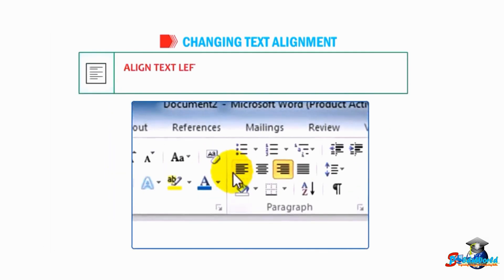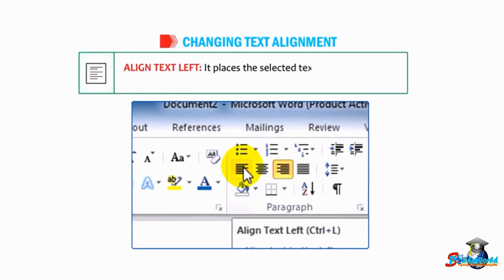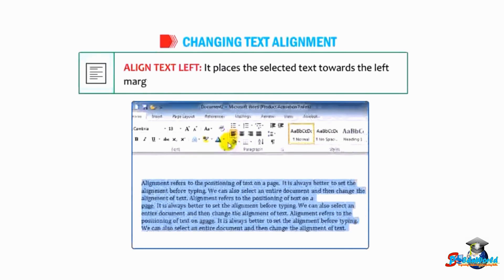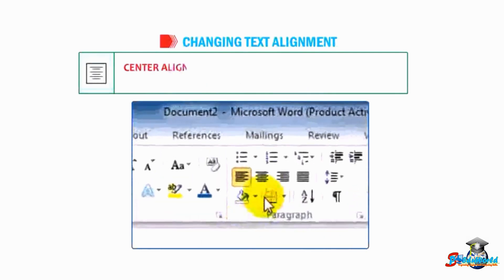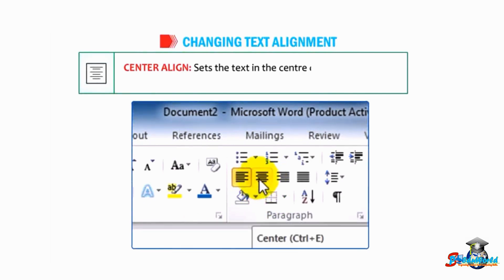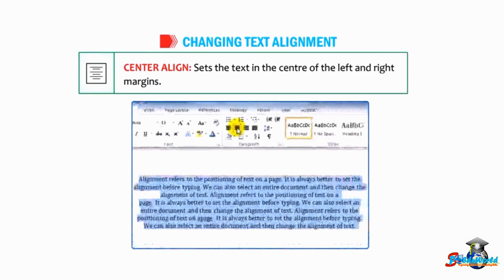Align text left places the selected text towards the left margin. By default, the text is always aligned to the left margin. Center align sets the text in the center of the left and right margins. It is mostly used for titles or headings.